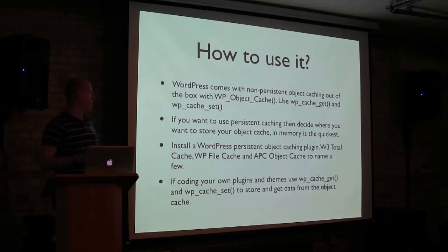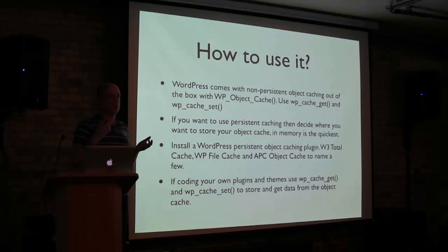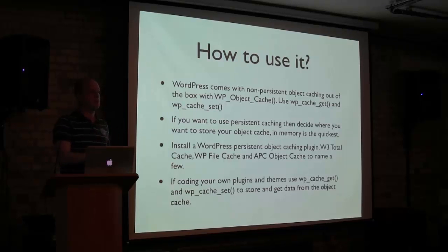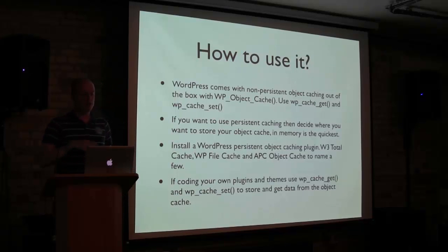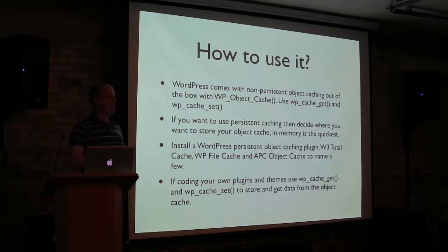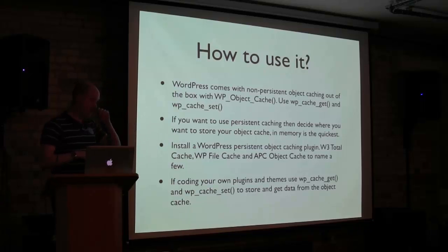So if you want to use persistent caching, where it's stored across page loads, you need to determine how you're going to store that object cache. Storing in memory is the fastest. You can also store to your database or to a file system, though those are slightly slower. You need to install a WordPress plugin that enables the non-persistent cache to become a persistent cache. And if you're using your own plugins or themes where you're getting data, you need to use the WordPress functions called wp cache get and cache set.